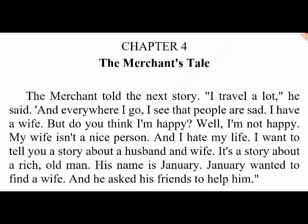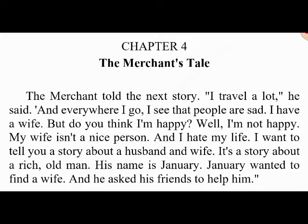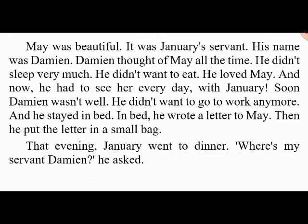'Don't find me an old wife,' said January. 'I want a young wife.' January's friends found a wife for him — her name was May. She was young but didn't have any money. January was happy with his wife. 'I'm old,' he thought, 'but now I've got a young wife — I won't have any more problems. And May is very beautiful.' But there was another person who thought May was beautiful: January's servant, whose name was Damien. Damien thought of May all the time — he didn't sleep or eat much; he loved May.